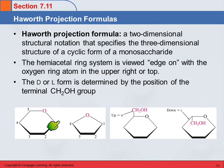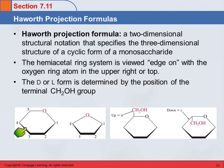In a Haworth Projection, we've got a ring and we're looking at it edge-on, mostly from this direction. That's why the front edge is drawn darker — because it's coming towards you. You'll notice the angles are not all equal because we're looking kind of at the side, a little from the top. The oxygen in the ring — and there's always going to be an oxygen in the ring — for a six-membered ring goes in the upper right corner. For a five-membered ring, it goes on top. We always draw these in the same position so we can recognize them more easily.